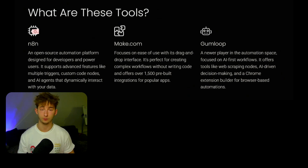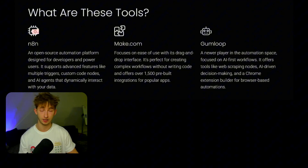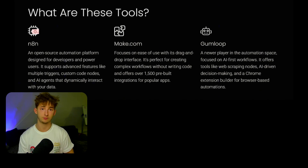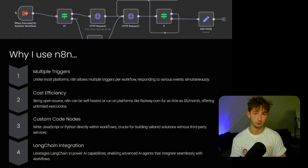I started my automation journey with Make.com. It was great for visualizing workflows and connecting apps moderately quickly. But as my projects grew more complex, especially when I needed multiple triggers in a single workflow or custom code — because in Make.com you have to go with third-party integrations like Zero Code Kit, which requires a subscription to do any coding like JavaScript or Python — I found myself constantly hitting limitations within Make.com. That's really when I discovered N8N.